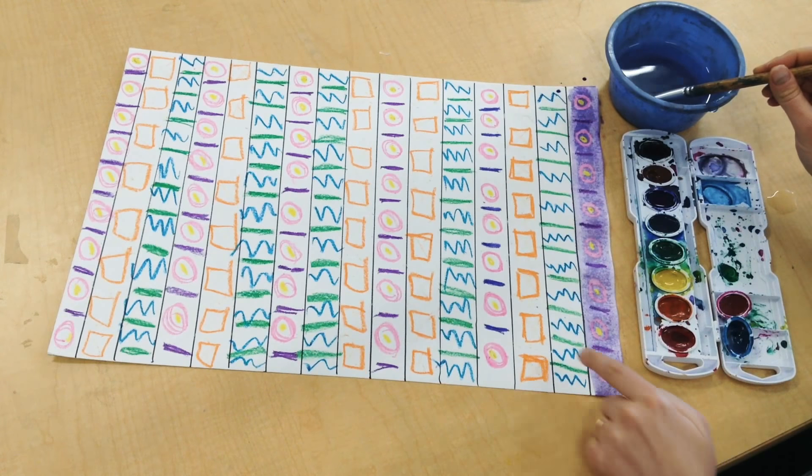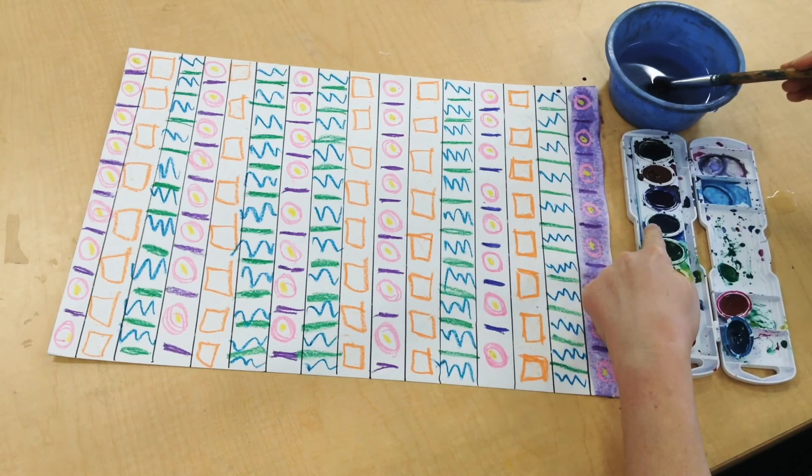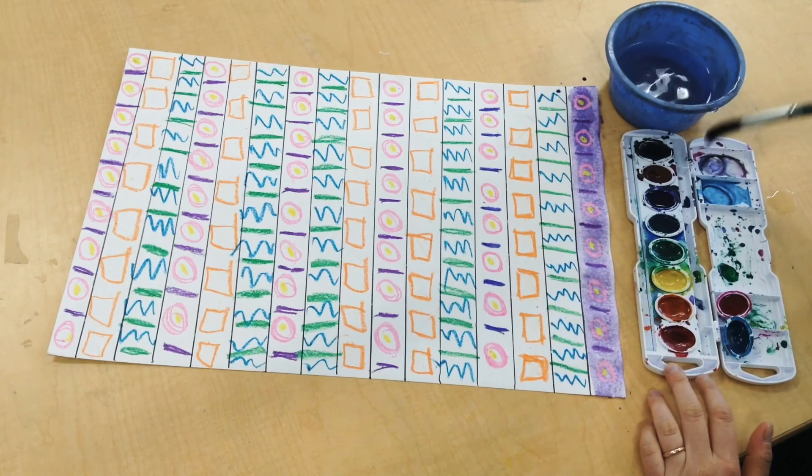So I'm going to think about doing an A, B, C pattern with my colors. So I think my pattern is going to be purple, blue, and pink because I love those colors.